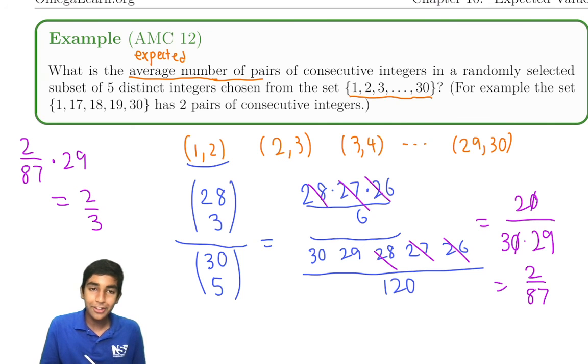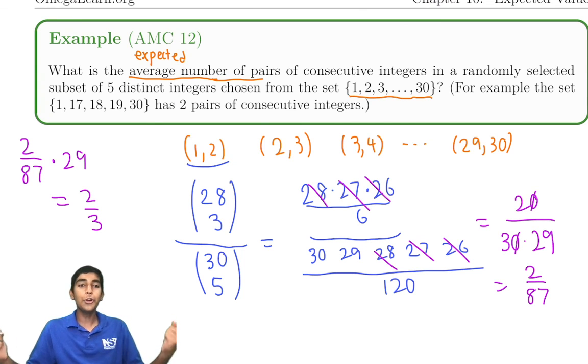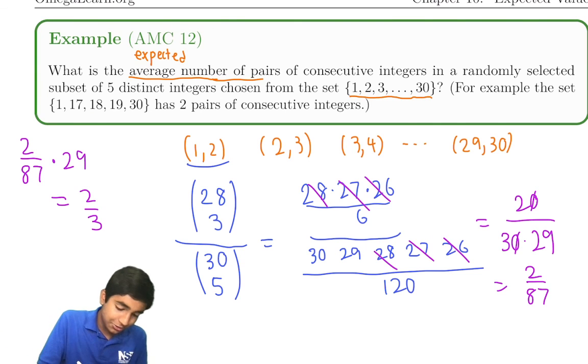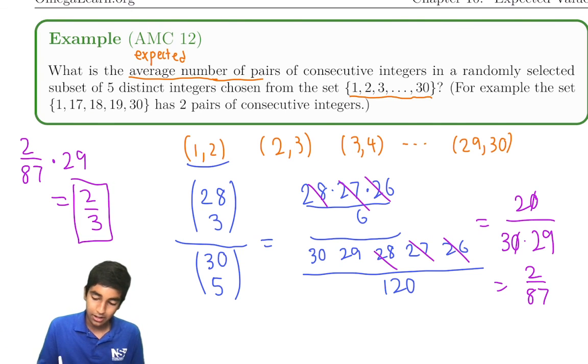How we just simplified this whole problem with linearity of expectation. It would be an impossible thing to do without linearity of expectation. 2 thirds is our answer.